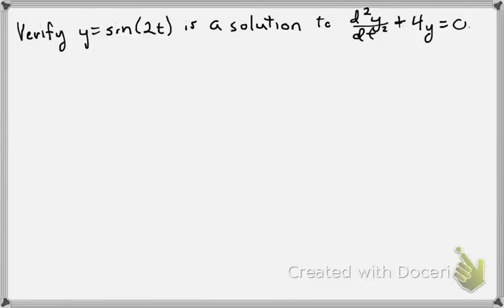We're asked to verify y equals sine of 2t as a solution to our differential equation, d squared y dt squared plus 4y equals 0. We do this via direct substitution.